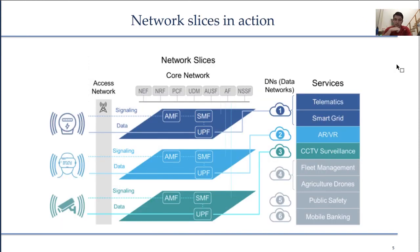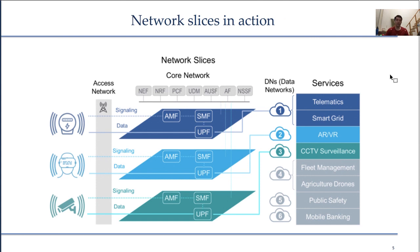Here you can see network slicing and service-based architecture in action. We assume different applications — for example, telematics, smart grid, AR/VR, CCTV surveillance — and each of those slices would have some functions specific to that slice and hence independent from other slices, but could also share some control functions from the control plane that are common to all of them. The benefit of network slicing is that it can all physically run on a single machine but appear as different networks to users.